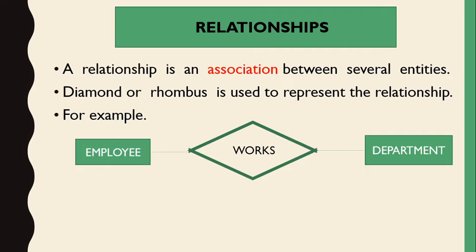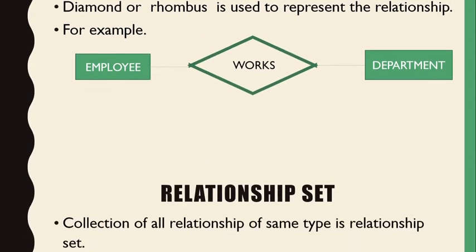From employee to department, the relationship is expressed as a verb. Employees and departments are connected by relationship verbs. So a relationship is a connection between two entities, and in an ER diagram it is represented in a diamond shape.